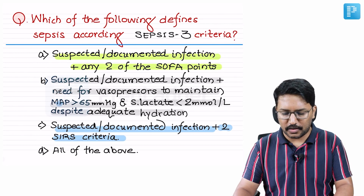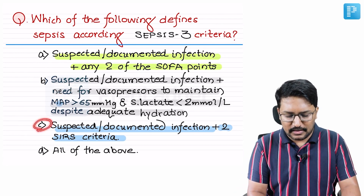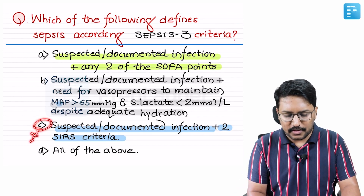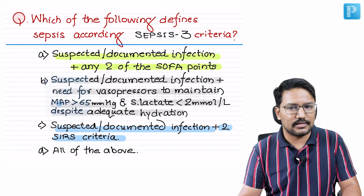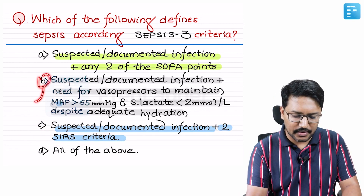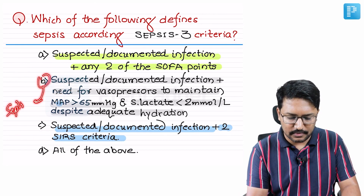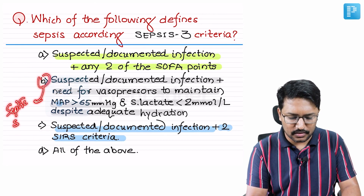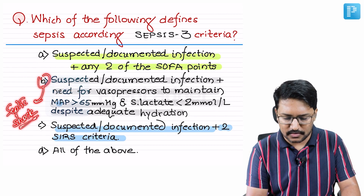Going back to the options: Option C can be confidently ruled out — we no longer follow the SIRS criteria. Option B is the typical definition of septic shock, not sepsis. That is how we define septic shock in Sepsis-3.